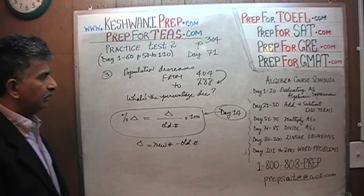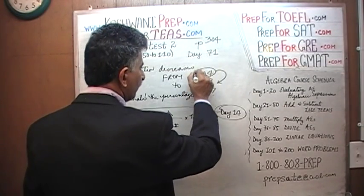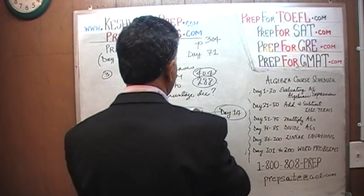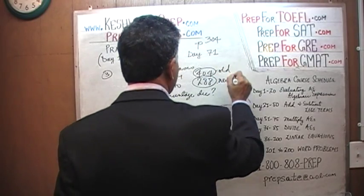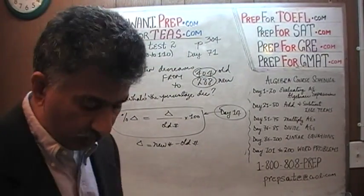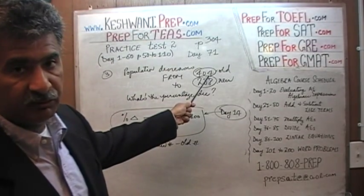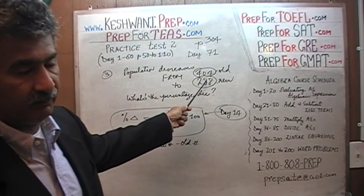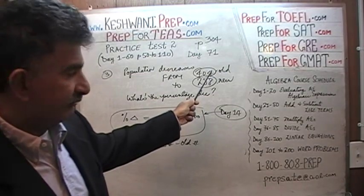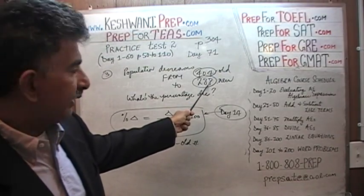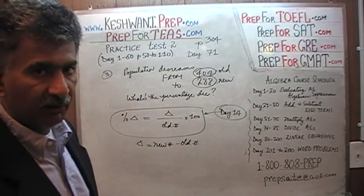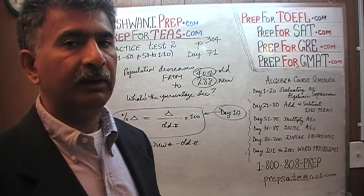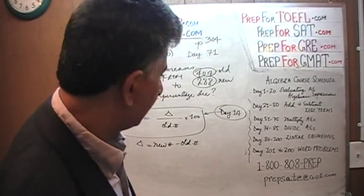How much is our new number? We go from 404 to 288. 288 is our new number and 404 is the old number. Sometimes we refer to the starting point as the initial quantity, sometimes the old number, sometimes the original number — it doesn't matter. That's the quantity we started our journey with. We started from 404 and we are down to 288. The fact that it's going down tells us it's a percentage decrease, and in our calculation we'll see a negative sign. The negative sign will indicate that it's a drop.